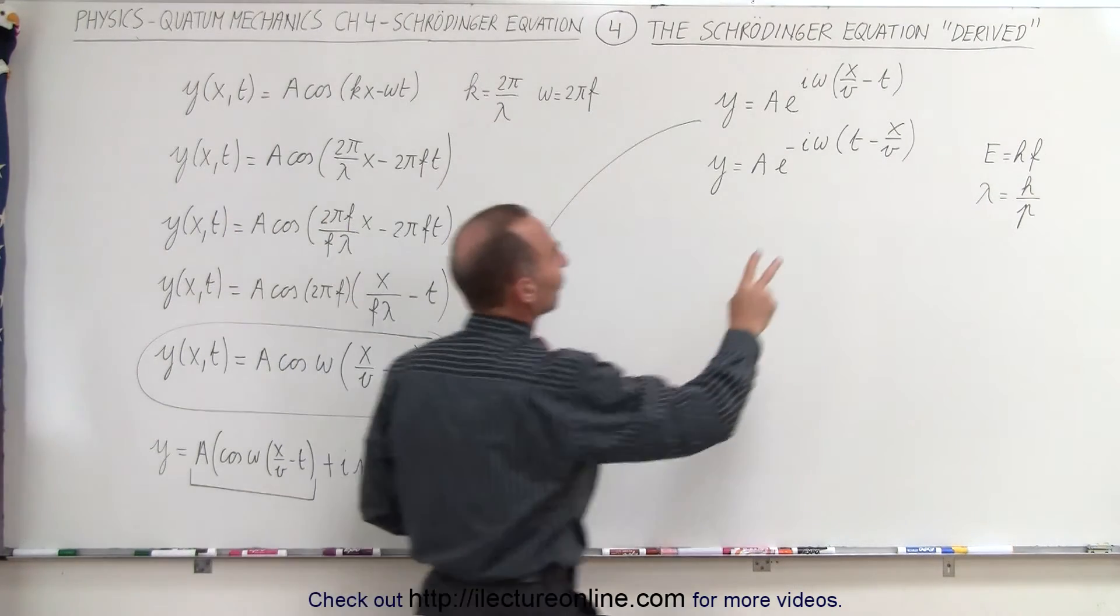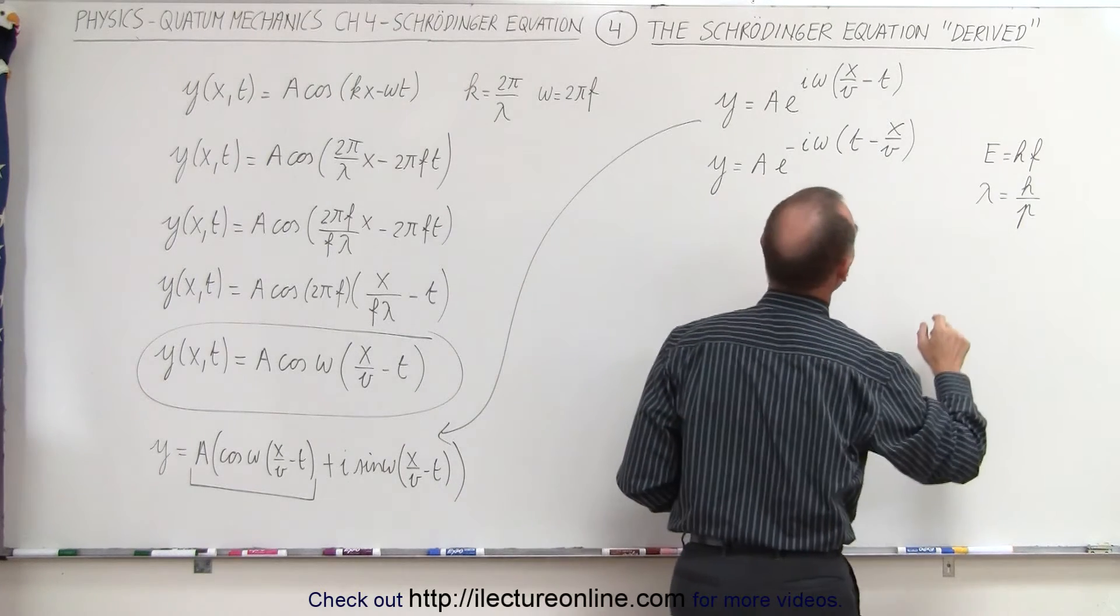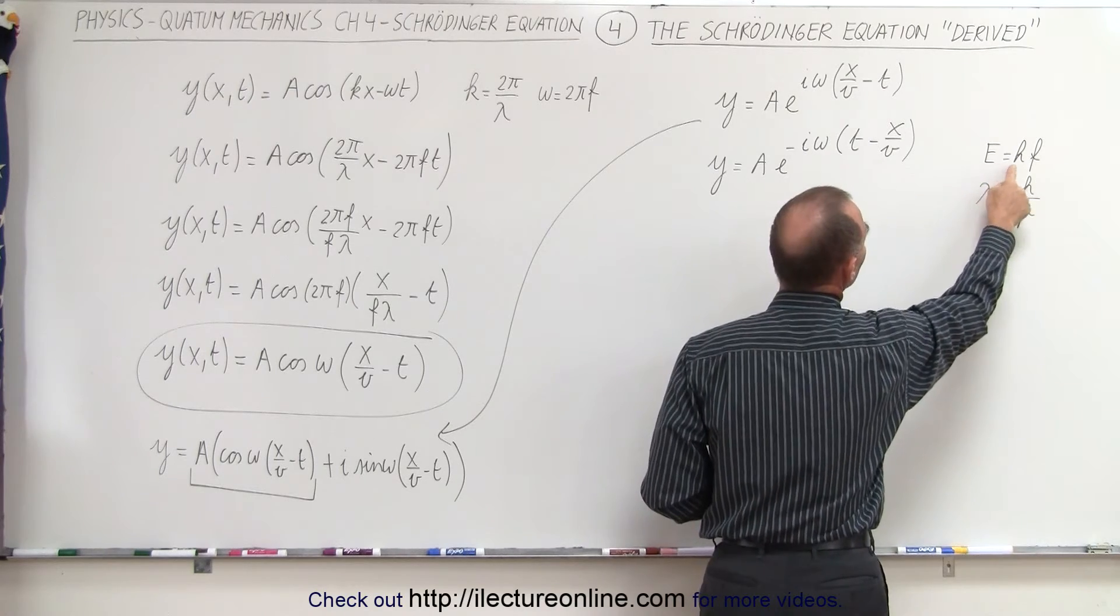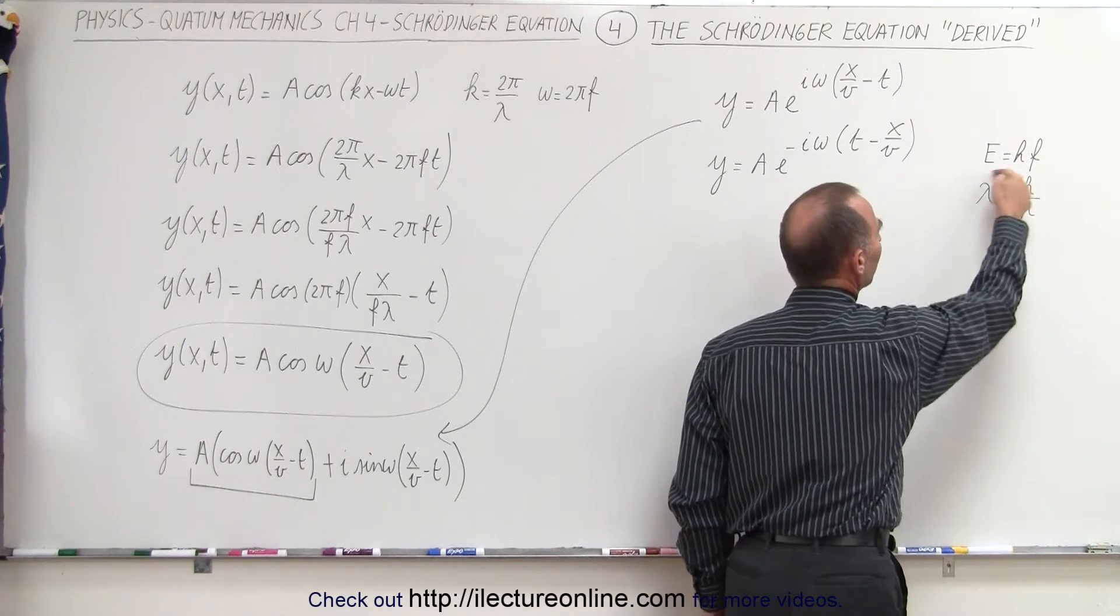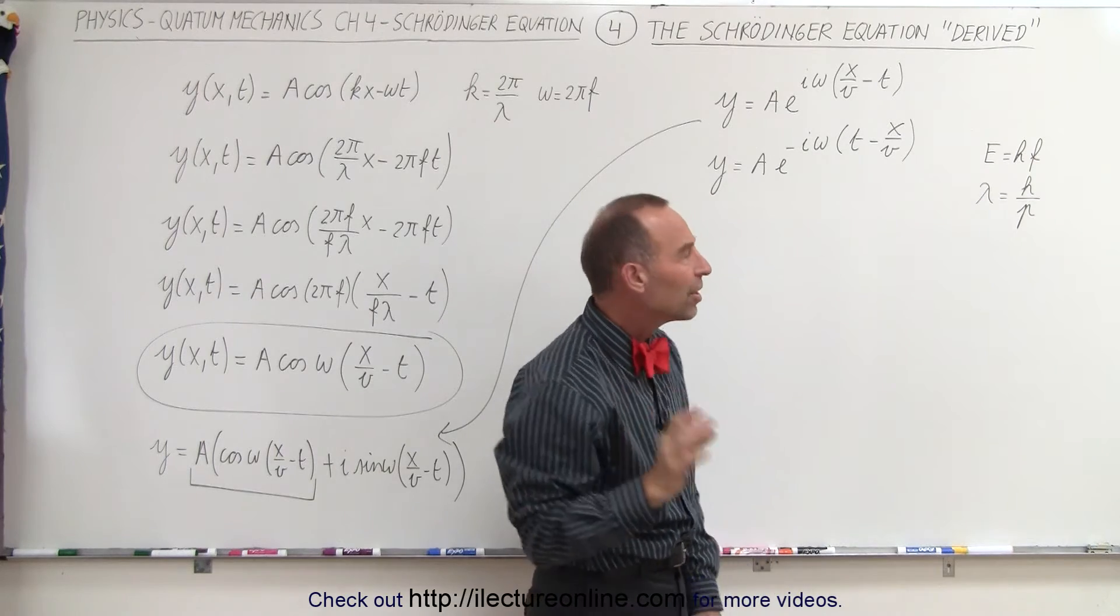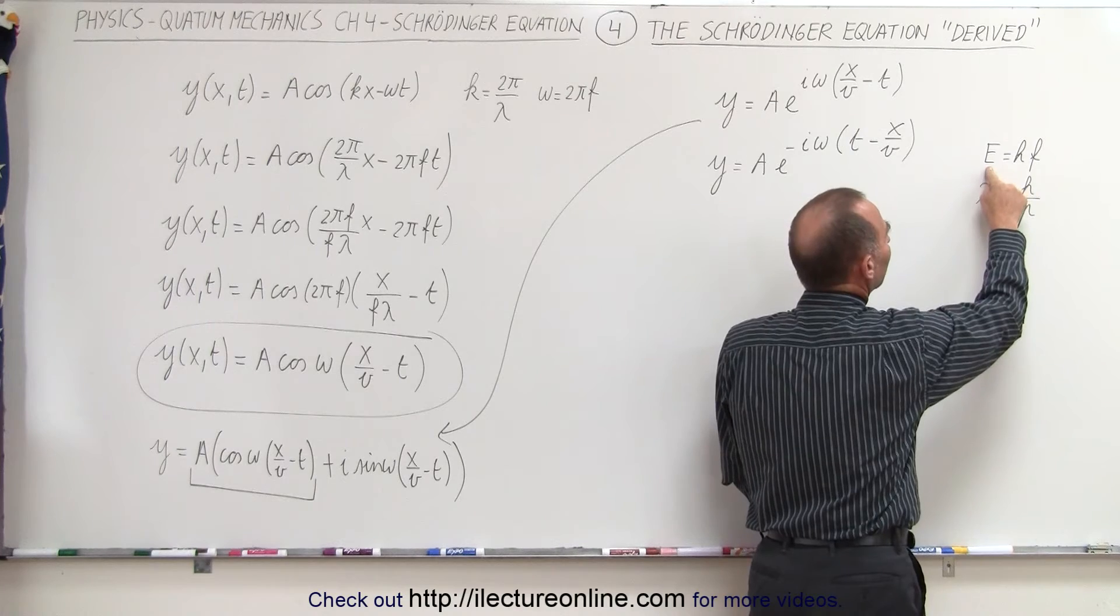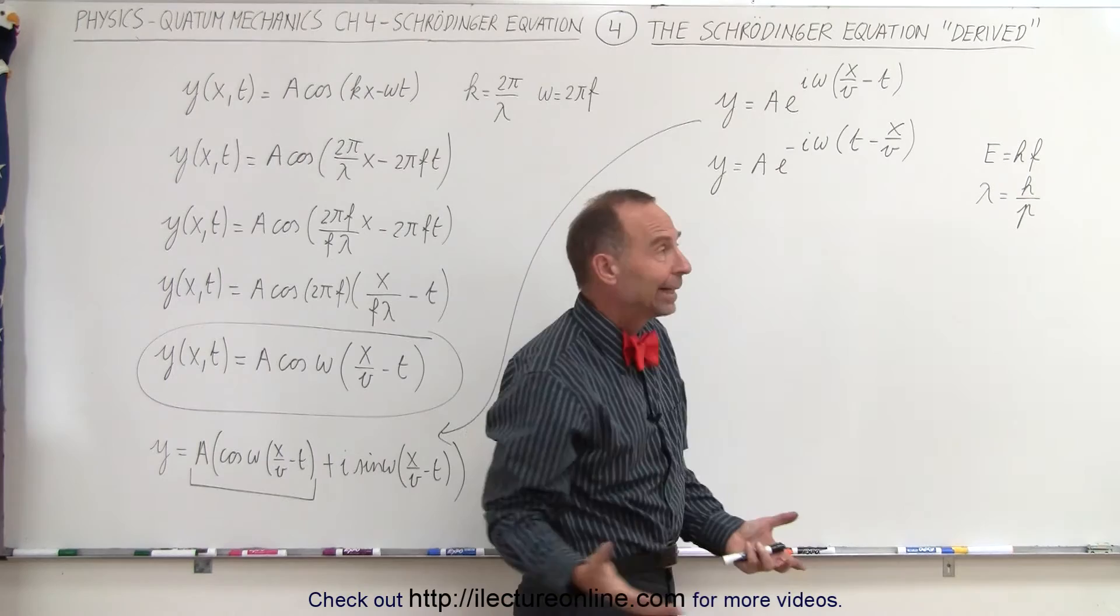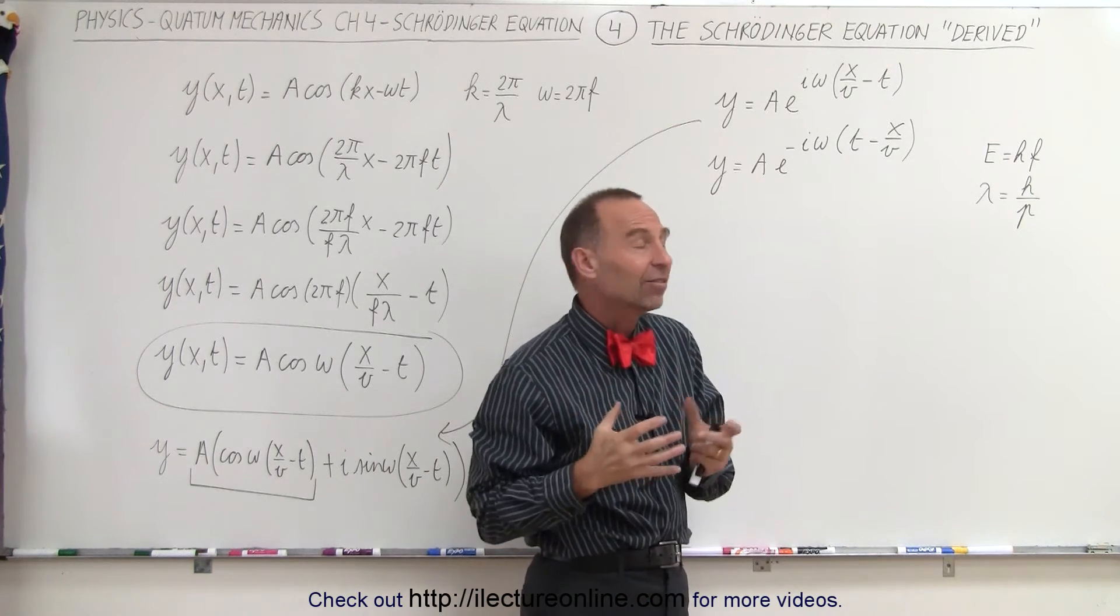So then what we did was we reversed the order of these, put a minus sign in there, and now we're going to replace some variables here. We're going to have E, the energy of a particle, is equal to h times f. And the wavelength of a particle is h divided by p. This is what we know as the de Broglie wavelength of a particle, but there's one thing you might have some problems with. A particle only has energy like this, h times the frequency, h being Planck's constant, if it's a photon. That is not the energy of a real particle.